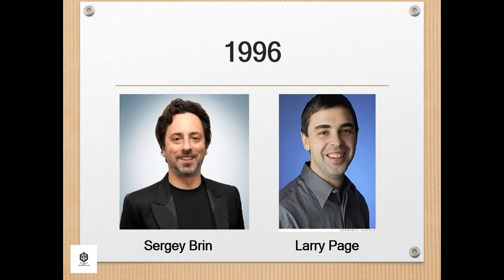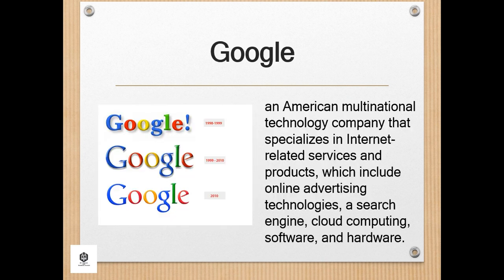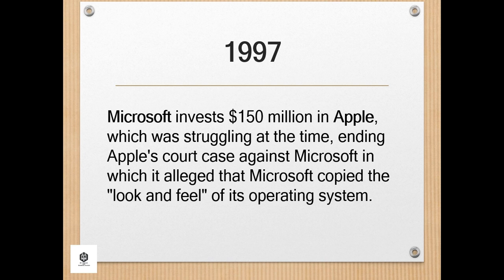In 1996, Sergey Brin and Larry Page developed the Google search engine at Stanford University. Google is an American multinational technology company specializing in Internet-related services and products, including online advertising technologies, a search engine, cloud computing, software, and hardware; it is considered one of the big four technology companies alongside Amazon, Apple, and Microsoft. In 1997, Microsoft invested $150 million in Apple, which was struggling at the time, ending Apple's court case against Microsoft in which it alleged that Microsoft had copied its look and feel.